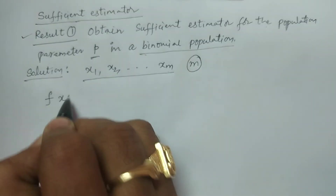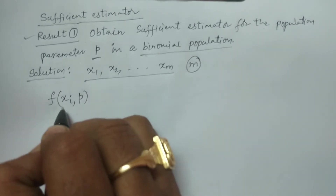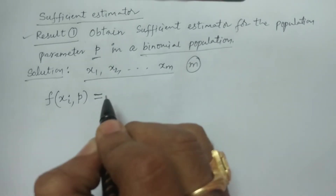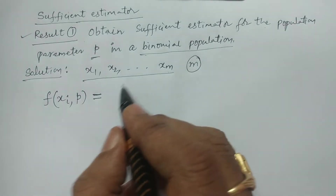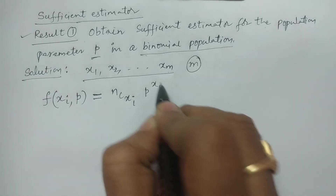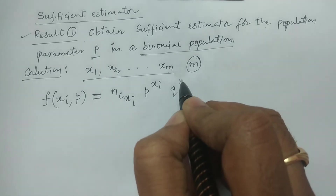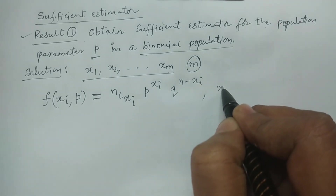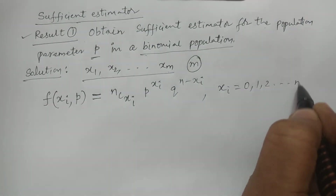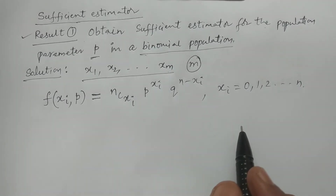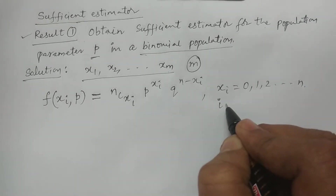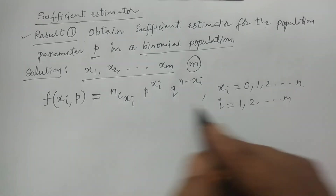— whose mass function, or density function, f(xi, p) = nCxi * p^xi * q^(n-xi), where xi takes the values 0, 1, 2, ..., n, and i takes the values 1, 2, ..., m, because the sample size is m.